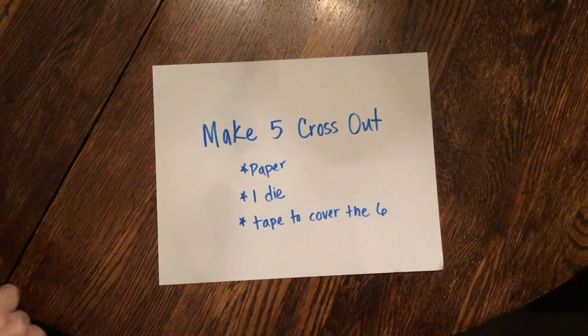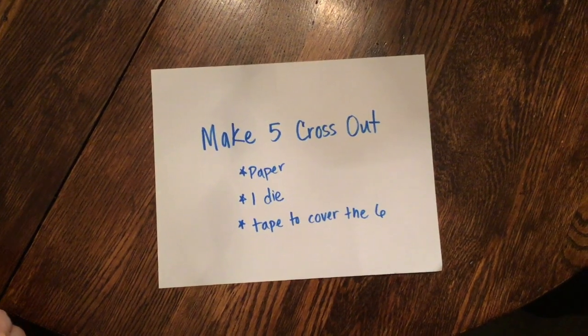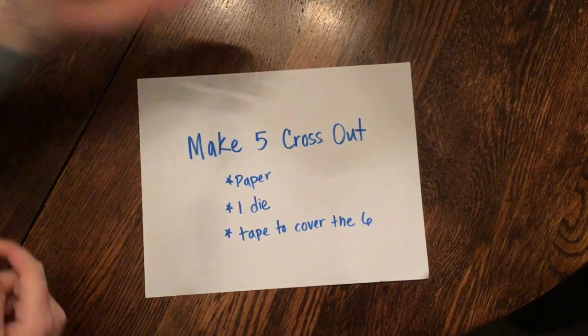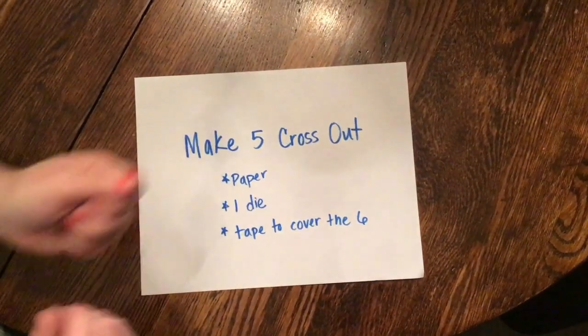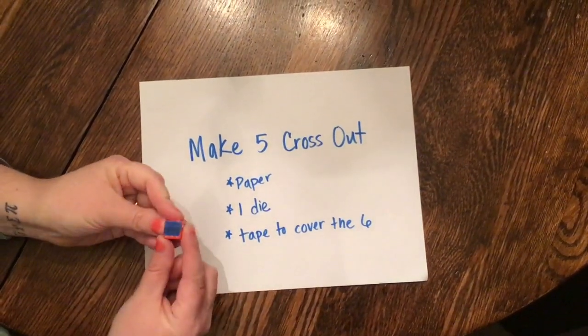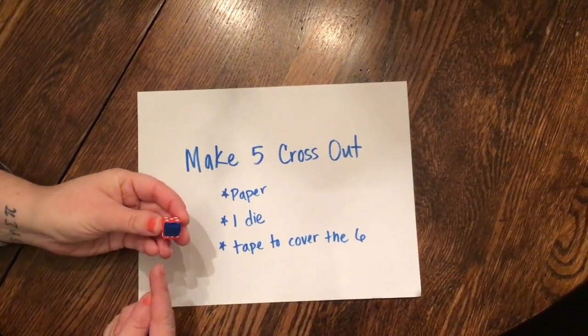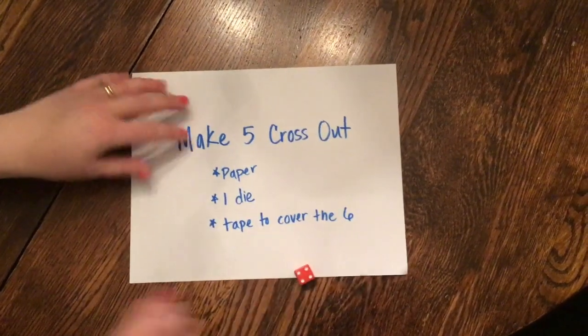You need paper, you need one die, and Lily pointed out to me that sounds crazy, but the singular form of dice is die. So you can use a regular die. I don't have my teacher dice at home, so we just need a zero side. I just put some painter's tape on it. We need zero through five on the die.